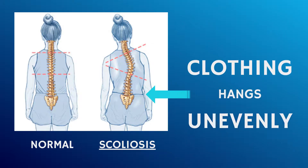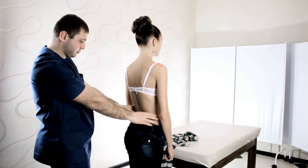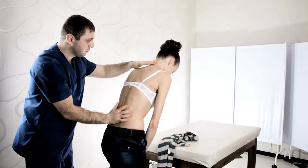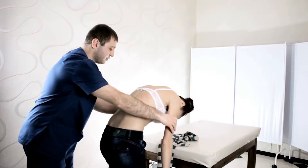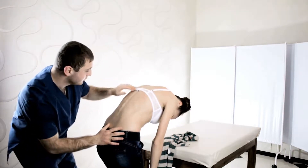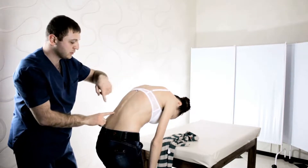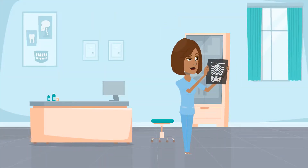Clothing hangs unevenly. When at the appointment with your doctor, they may conduct the Adams Forward Bend Test. As your spinal curve develops and the spine twists, an asymmetry of the ribcage or waist is created. If signs are present, you will be referred to a specialist. X-rays will also be needed to show the severity of the curve and which part of the spine is affected. An MRI scan may also be needed.